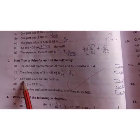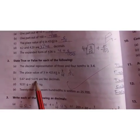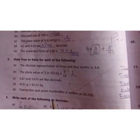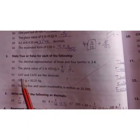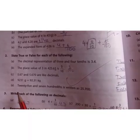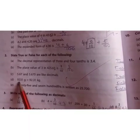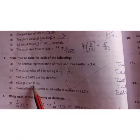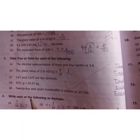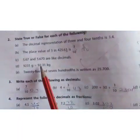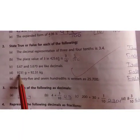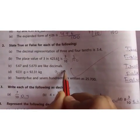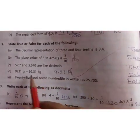Next we have 5.67 and 5.670 are like decimals. Yes, they are like decimals because the value of both of them are same. 9231 grams is equals to 92.31 kg. Is it true? So children, it is false because 9231 grams will be 9.231 kg, not 92 kg. So it is false.